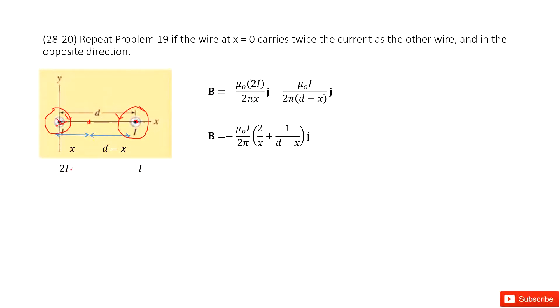And then we write down the magnetic field by wire, right? mu naught and the current is 2i divided by 2 pi x. The second part is mu naught i divided by 2 pi d minus x.